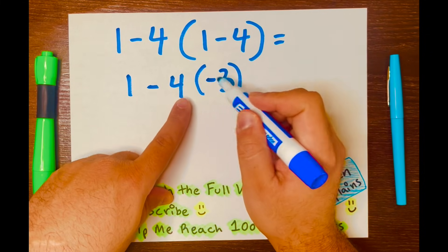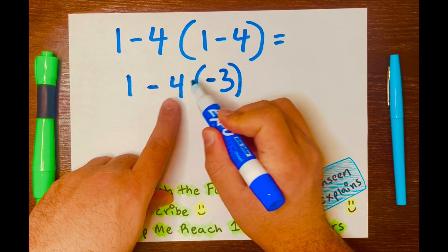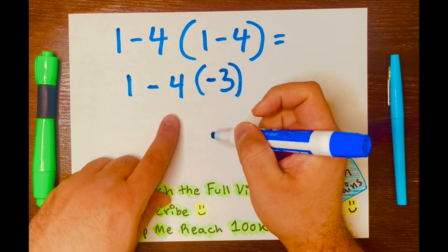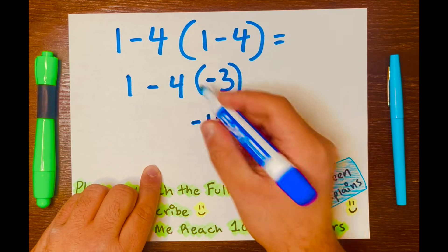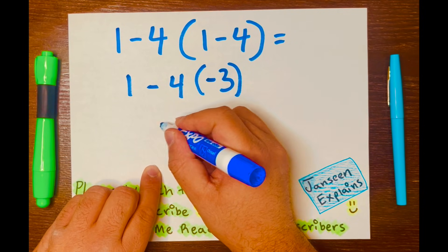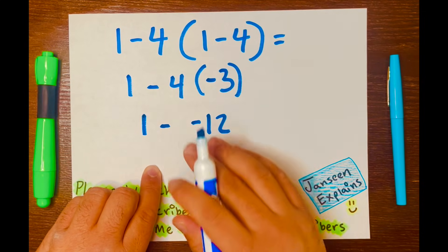Now, 4 times negative 3 will go first. So what is 4 times negative 3? Negative 12. And then bring down the subtraction symbol down and the 1 down.